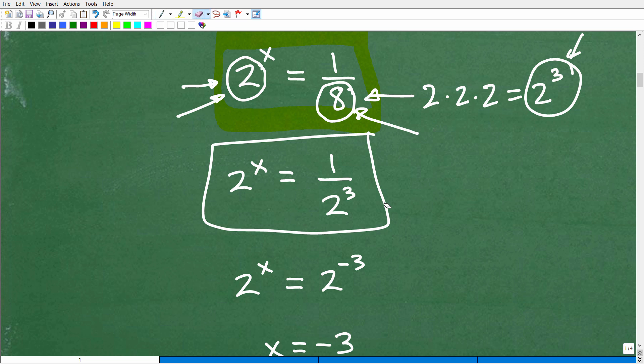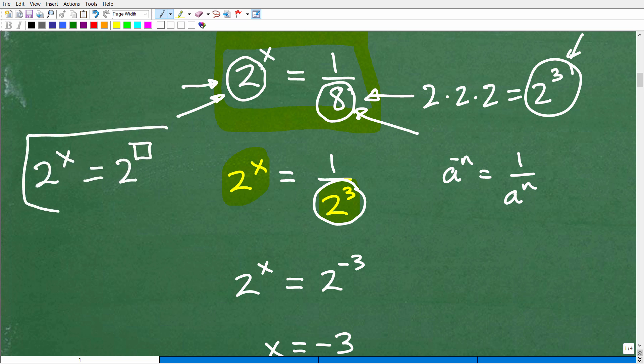So we have 2 to the x power is equal to 1 over 2 cubed. Remember, there's this lovely little property of exponents. a to the negative n is equal to 1 over a to the n. You need to know how to deal with positive and negative exponents, specifically negative exponents. But here I have 1 over 2 cubed. I can rewrite this. I want to kind of match this. I have 2 to the x. I would love to have 2 to some number, because whatever this is, these are exactly the same. Whatever x is, whatever this number is right here, that's going to be the answer.